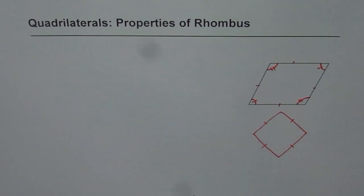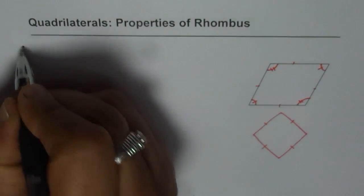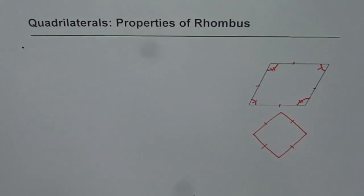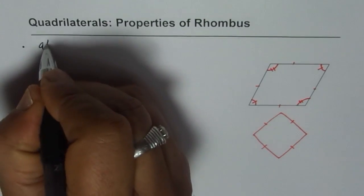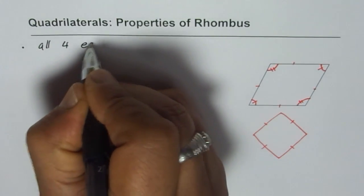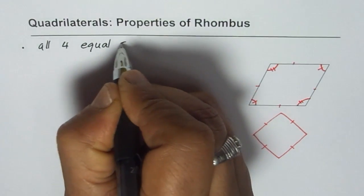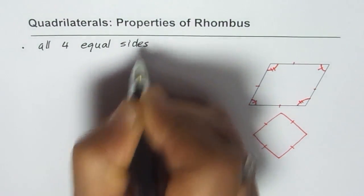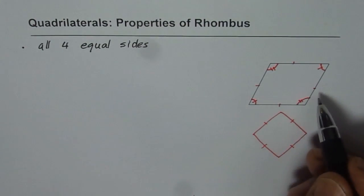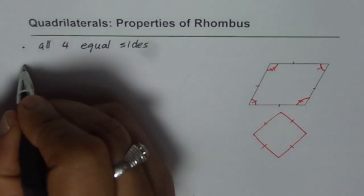Now with this let us list the properties of rhombus. What we notice here is that it has all four equal sides and opposite sides are parallel.